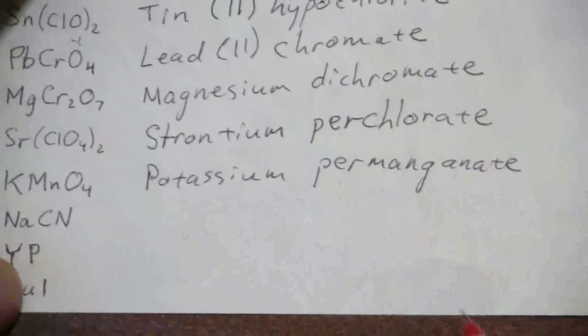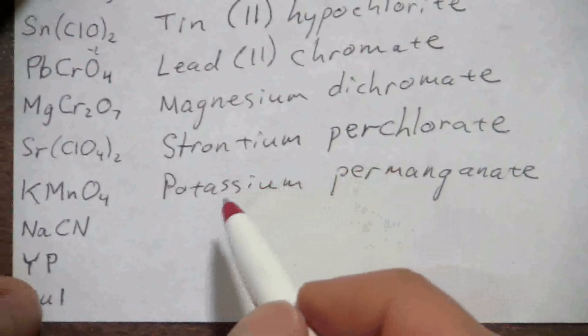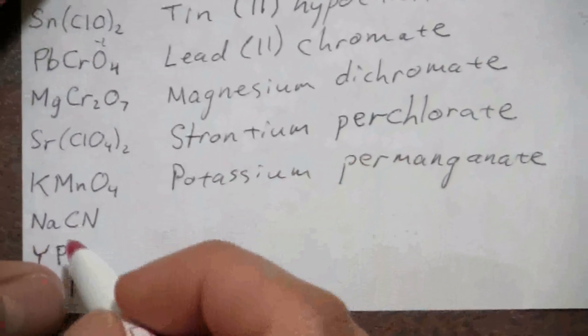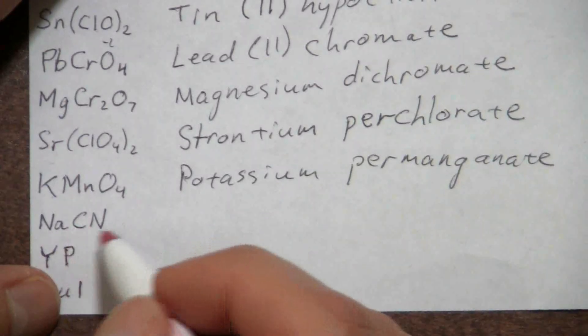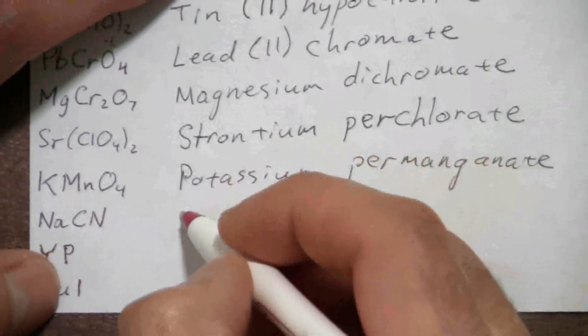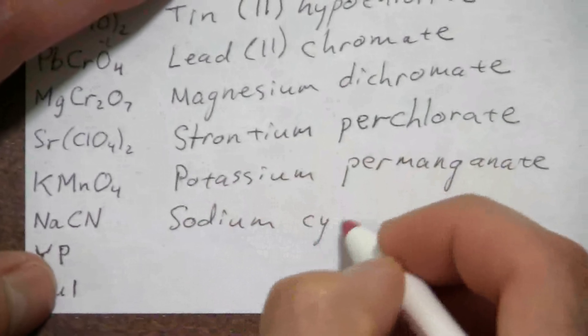Potassium permanganate is often, or at least it was often used as a disinfectant. So here we have sodium and CN, which is the cyanide ion. So that is sodium cyanide.